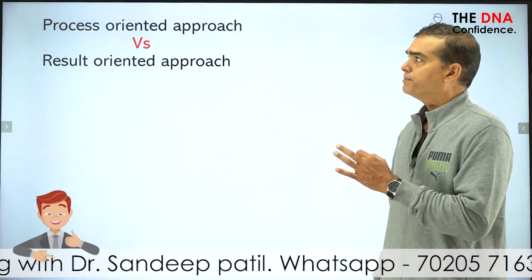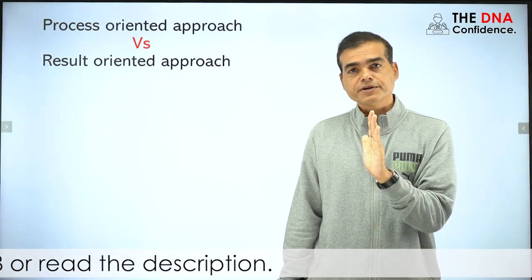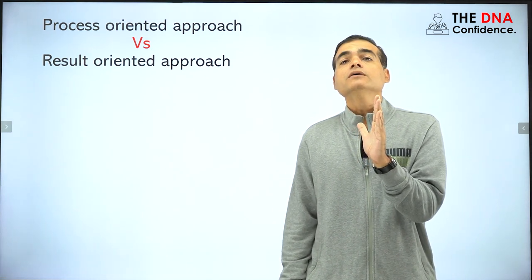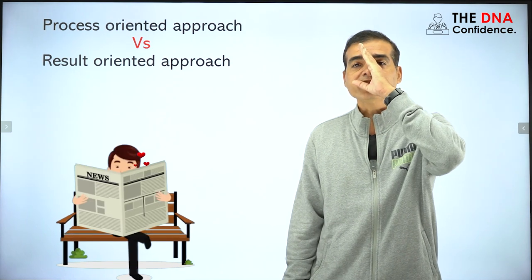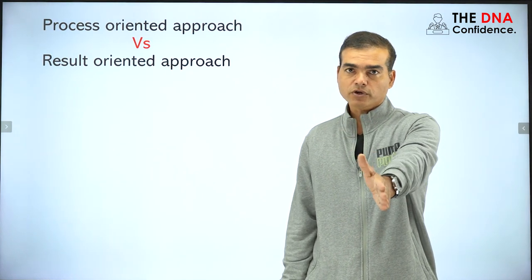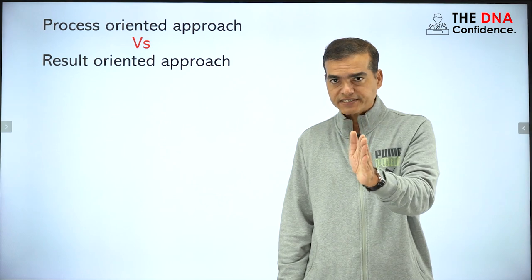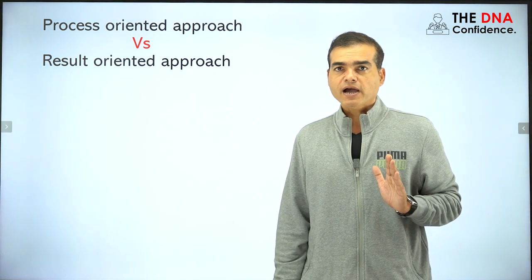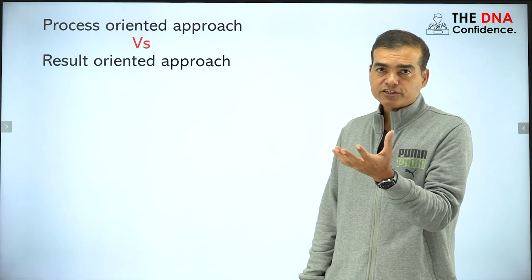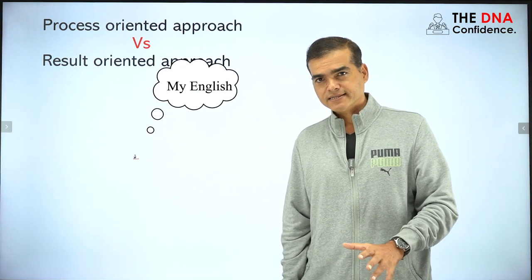Before moving ahead, let us understand the process-oriented approach versus the result-oriented approach. While reading a newspaper, you must have a process-oriented approach — focus on reading and understanding the newspaper, and forget about English improvement. If you keep focusing on results, you won't be able to focus on the process and you will lose both. Focus on enjoying the newspaper; don't think about when your English or vocabulary is going to improve.